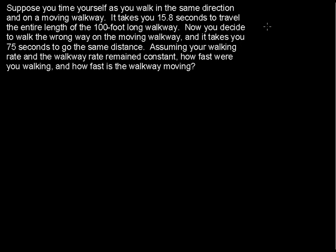This problem is the same idea but with a different example. We have a moving walkway moving from left to right, and you are on it also walking in the same direction. That's the first scenario where it takes you only 15.8 seconds to go the 100 feet. In the second scenario, the moving walkway is still moving at the same rate from left to right, but you are walking in the opposite direction — from right to left. Presumably you are walking faster than the walkway rate because you do gain some ground, but it takes quite a bit longer.